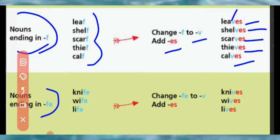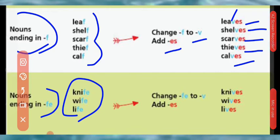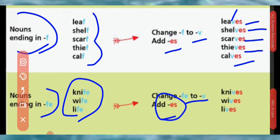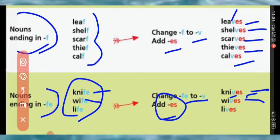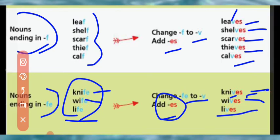Now, nouns that end in FE. For these words, FE is replaced with V and ES is added to change them into plural forms. For example, knife — K-N-I-F-E — F is replaced by V and ES is added, so knife becomes knives. Wife becomes wives, and life becomes lives. This is how you change nouns ending in F or FE into their plural forms.